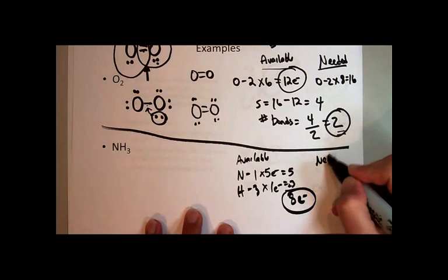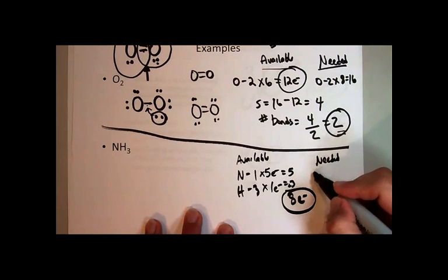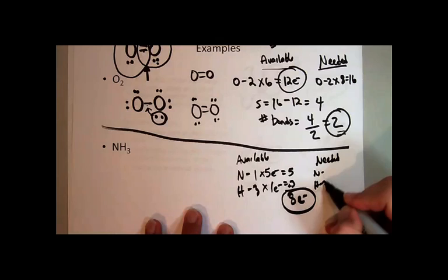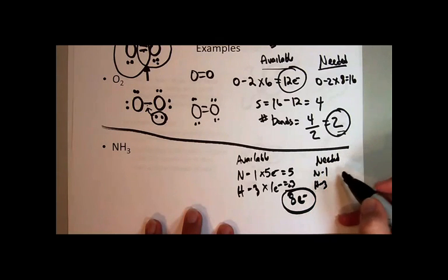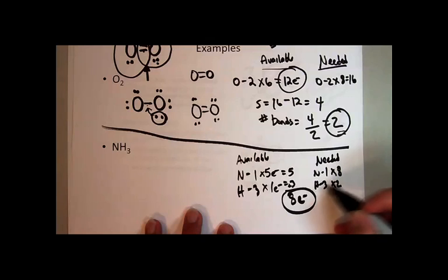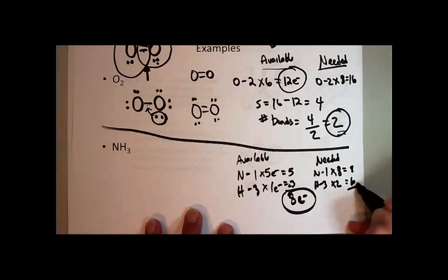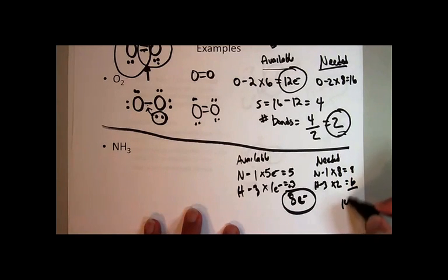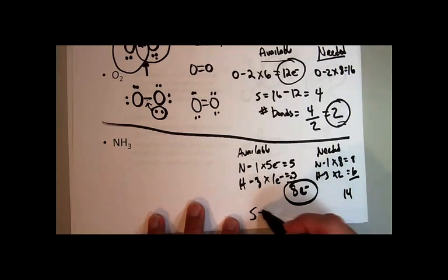And then needed, in this case, we've got one nitrogen, three hydrogens. Nitrogen is, like most other elements, it needs eight to satisfy its valence shell. And hydrogen is unusual. It only needs two. You have to remember that. And so eight plus three times two is six. The total needed to satisfy individually each atom here is 14. So to predict the number of bonds,